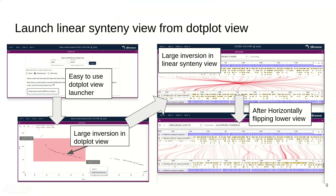I can click and drag to select this region and it will launch a linear synteny view, where we can see that same large inversion with an hourglass shape. Importantly, you can flip this entire view, which will give you the inversion kind of straightened out. Then you can see the smaller sub-inversions inside it. This is just an example of the type of workflow that people analyzing different genomes may want to work with.